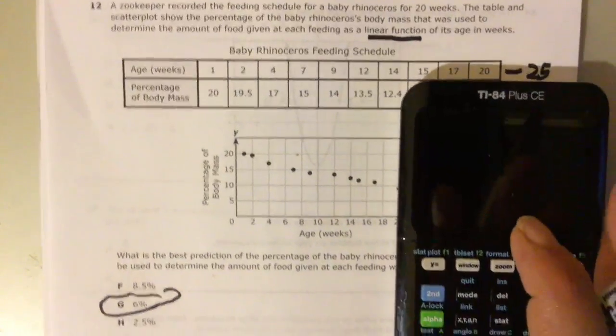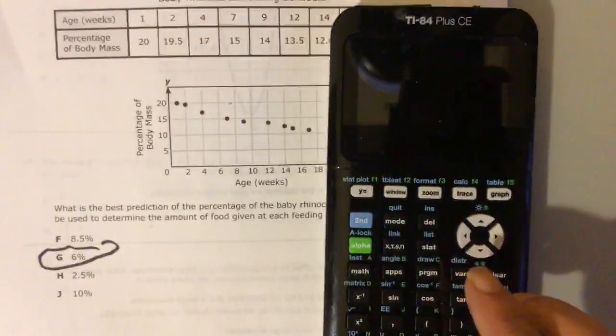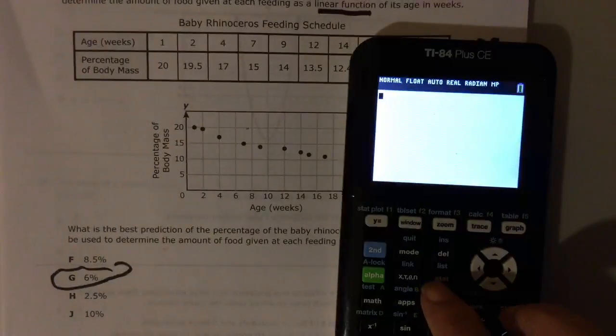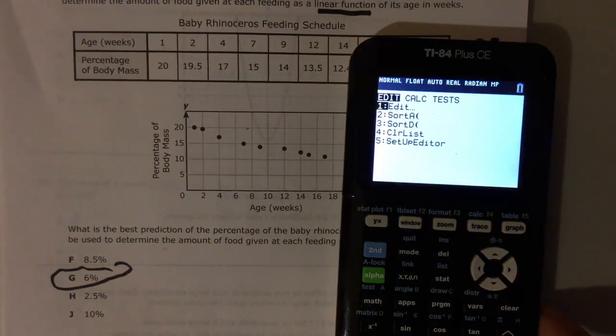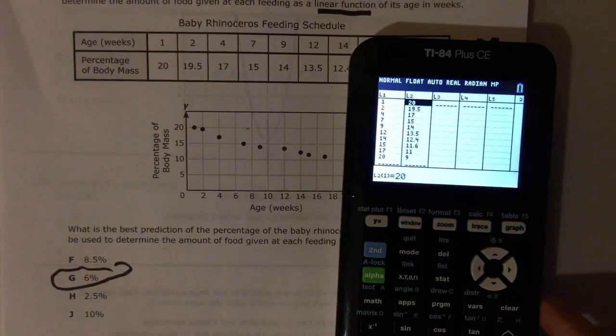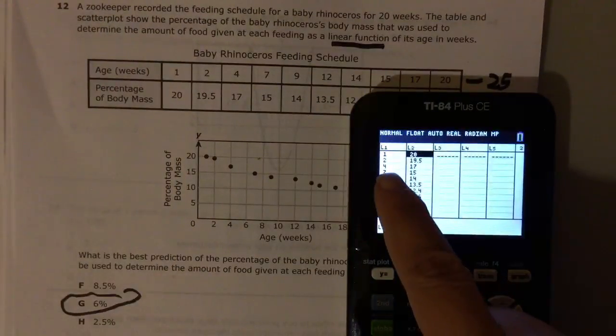So what you're going to do is go to your STAT button here. Turn your calculator on and go to STAT. All right, and then hit enter for edit.